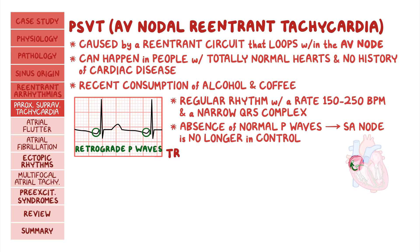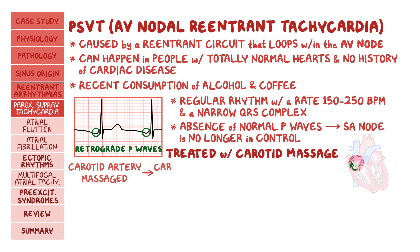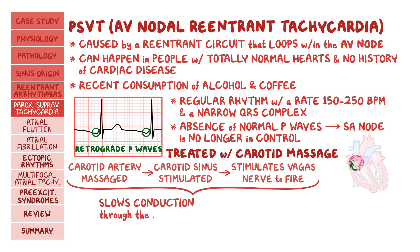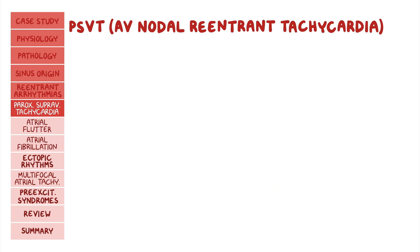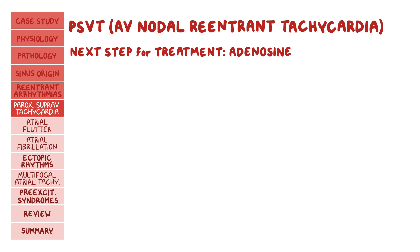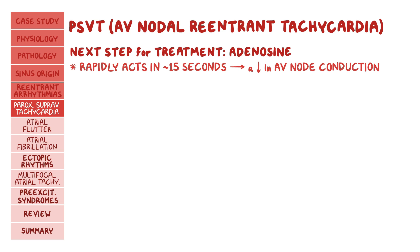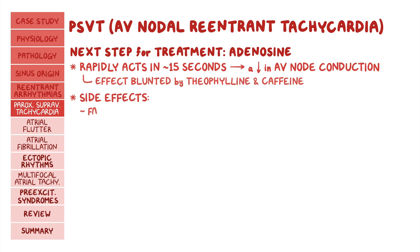PSVTs are classically treated with vagal maneuvers like carotid massage. When the carotid artery is massaged, the carotid sinus is stimulated, which stimulates the vagus nerve to fire, slowing conduction through the AV node, interrupting the re-entrant circuit, and effectively terminating the arrhythmia. If vagal maneuvers don't work, the next step for treatment is adenosine, which is commonly tested. Adenosine rapidly acts in about 15 seconds, causing a decrease in AV node conduction. Keep in mind that its effect is blunted by theophylline and caffeine. Its side effects include facial flushing, hypotension, bronchospasm, and chest pain.